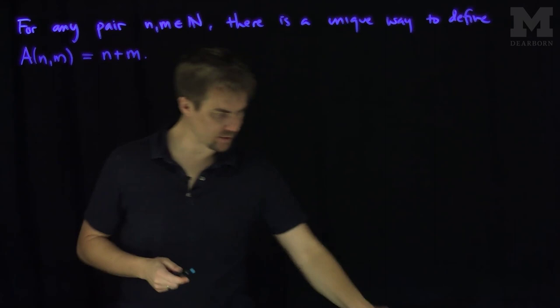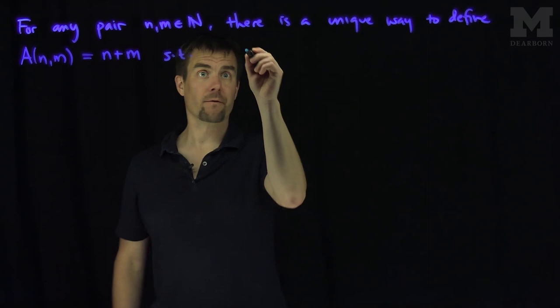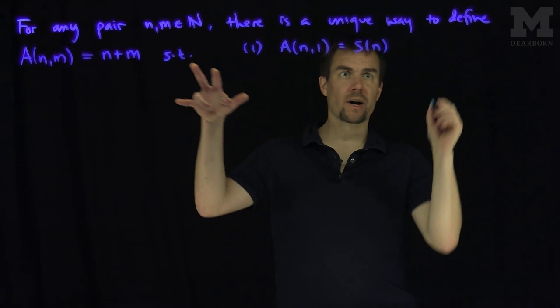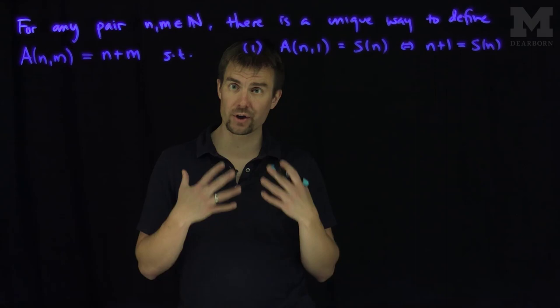Such that the first property of this addition operation is that A(n,1) is going to be the successor of n. In other words, another way to write this is that n plus 1 is equal to S(n). That coincides with what we think a successor should be — using our intuition from addition, S(n), the successor of n, should be n plus one more for the natural numbers.